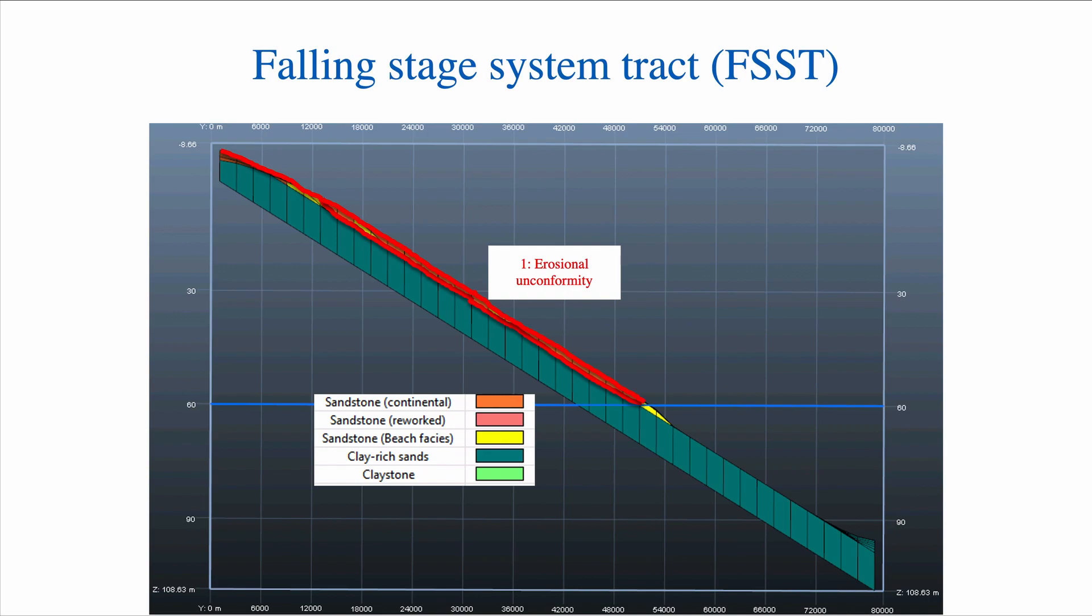And here I can draw this surface of correlative conformity because I know time-wise where it is. If I put it in purple here, you can see that I have this surface of correlative conformity right at the top of the yellow bits—the yellow sands of the last deposits of the FSST. And this surface of correlative conformity paired with the erosional unconformity is the sequence boundary. So here we have our sequence boundary for this particular system.